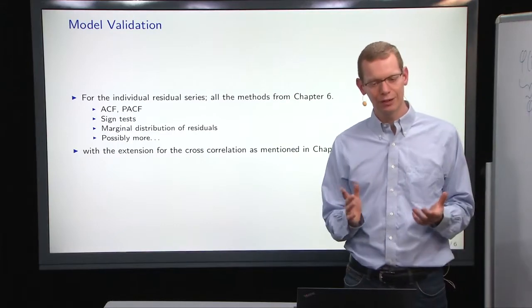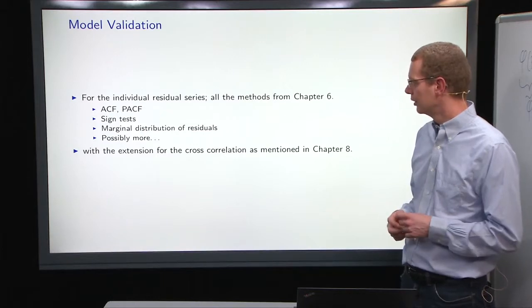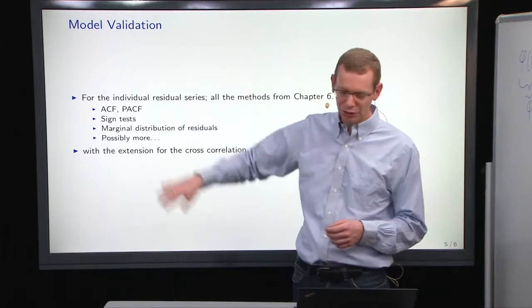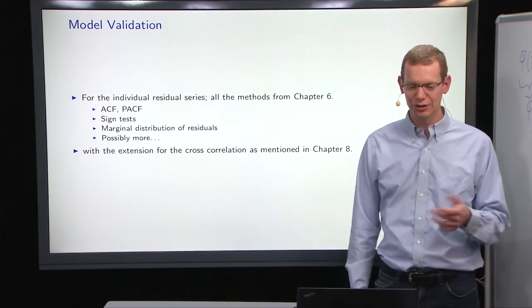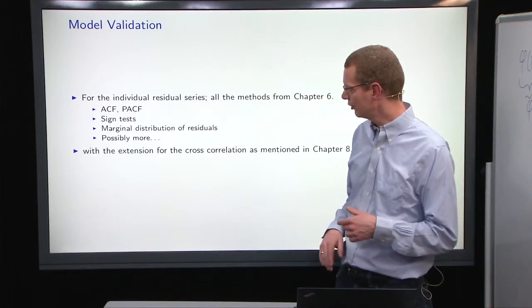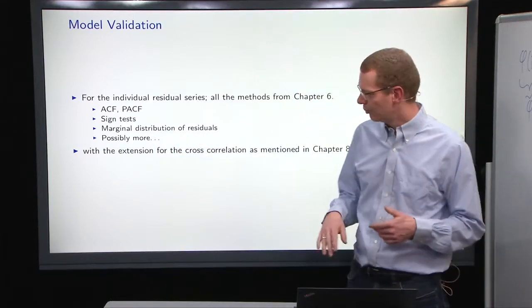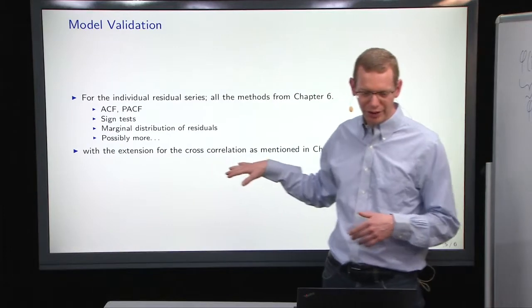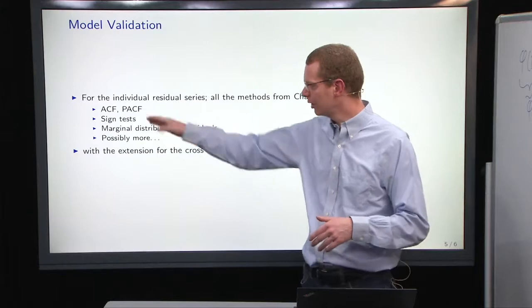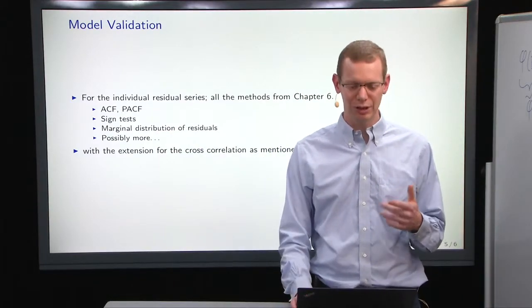Before doing that, just say a few words about model validation in these state-based models, as we can also call them. Of course, we look at the autocorrelation function, partial autocorrelation function, as we did for the univariate series. We do that for the individual series. You can do a chi-squared test, look at the distributions of the residuals, but what you also do is look at the cross-correlation of the residuals to see if there is something more than just the autocorrelation, but also the cross-correlation that you need to deal with.